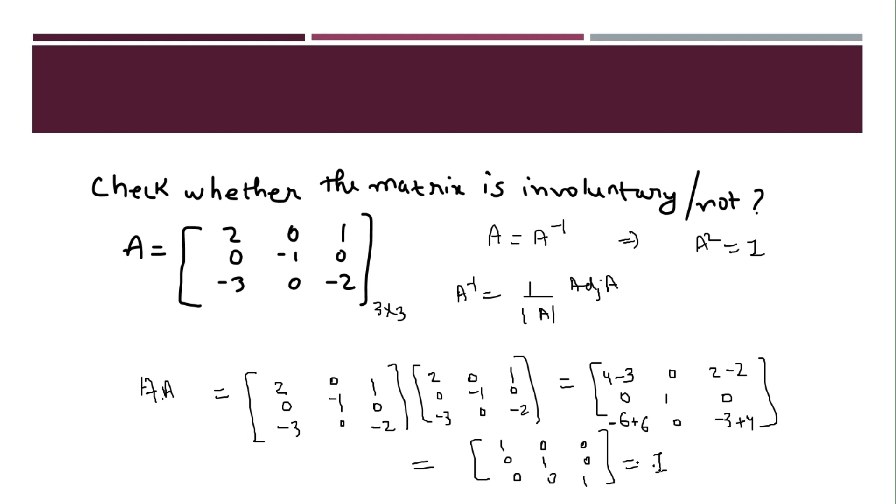Hence, because A squared is I, that means matrix is equal to its inverse. That means the matrix is involuntary matrix. Moving on to the next question.